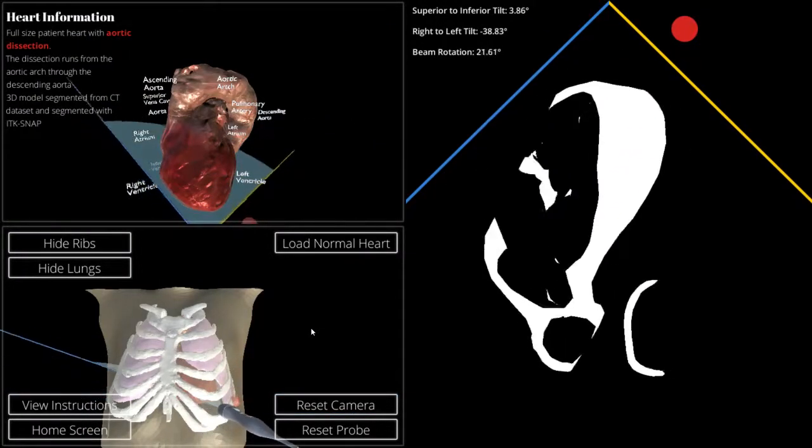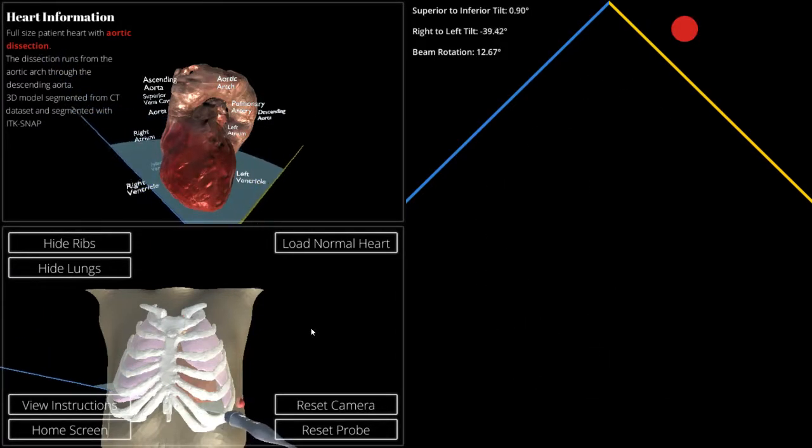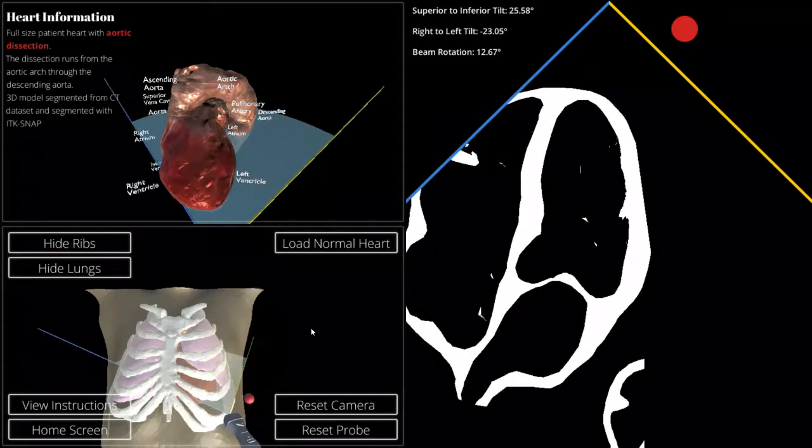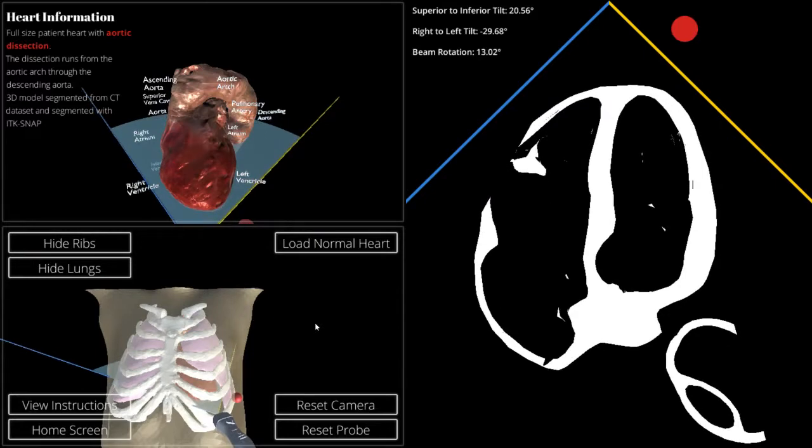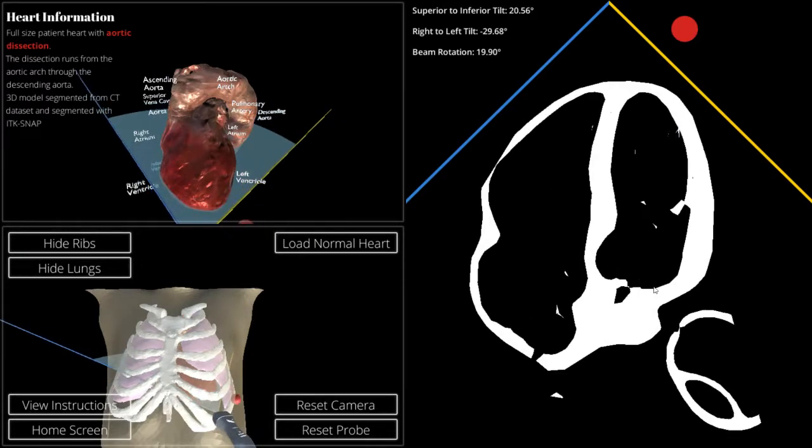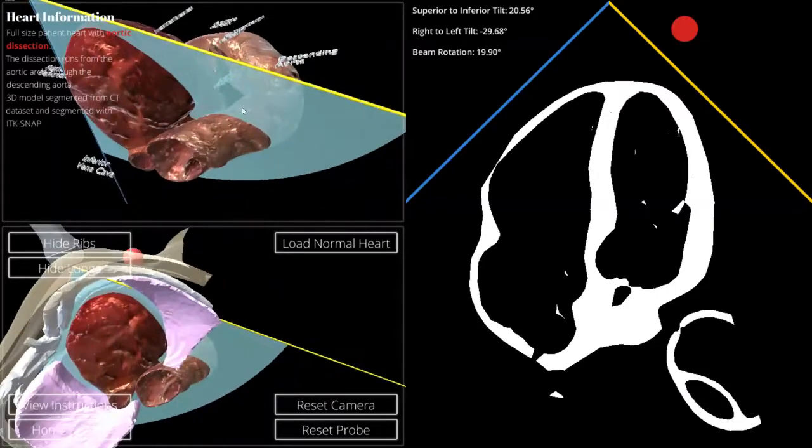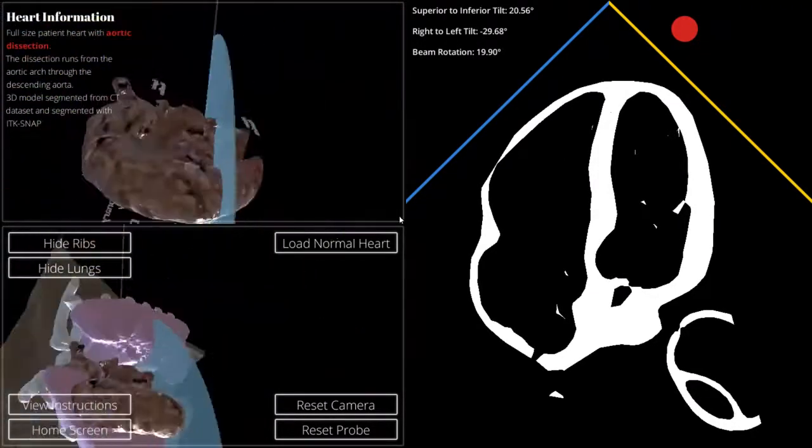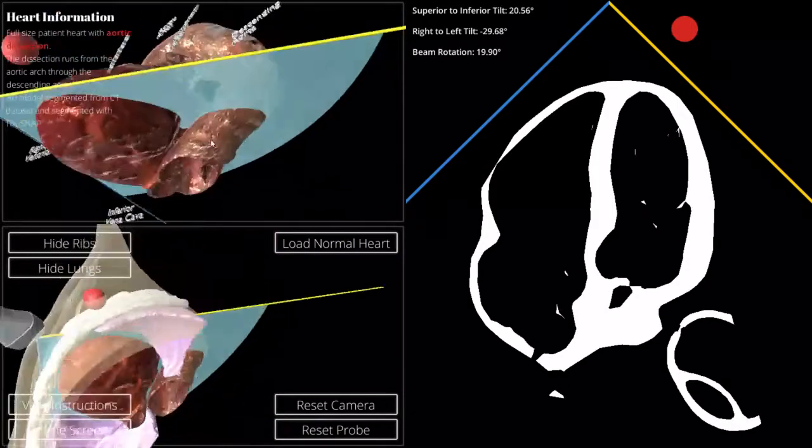We'll move back over and see if we can identify that aortic dissection. There it is. So as you can see here, we get the two chambers of the heart, including the aortic dissection throughout the descending aorta. We can actually see exactly what structures we are cutting through on the heart when we switch over to this view. And we can toggle on and off between the normal heart and the pathological heart whenever we want.